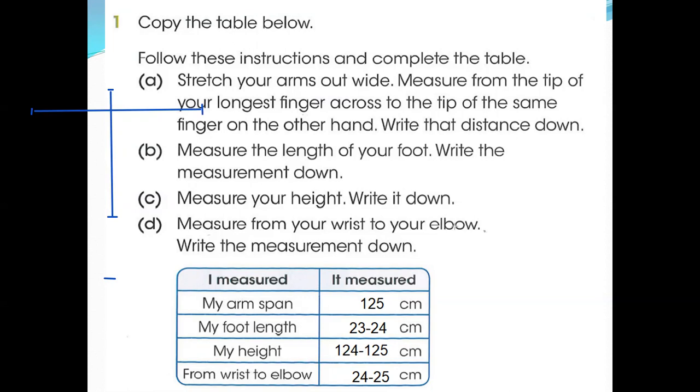And what about wrist to elbow? If this is your arm, this is your hand, from here to the elbow. From the wrist, where you're wearing your watches, from this portion to this portion. So this is mostly 24 to 25 centimeters. You can see here the foot length and the wrist to elbow are almost the same, approximately the same, 23-24, 24-25. So you can do it in your home and you need to write according to you. This is a learner's answers.